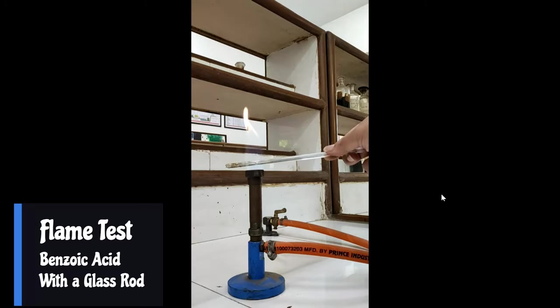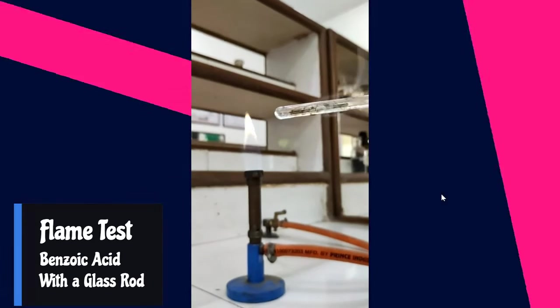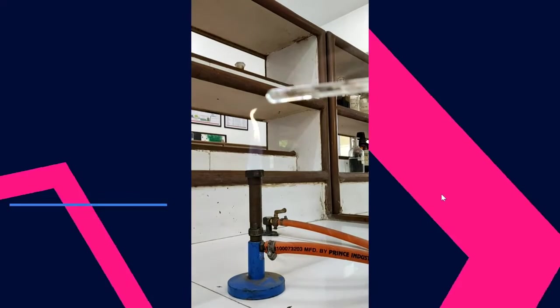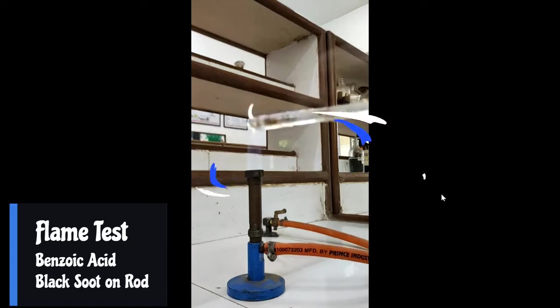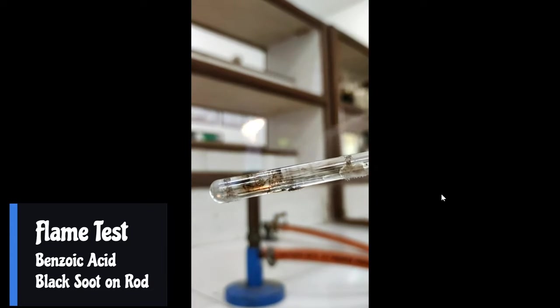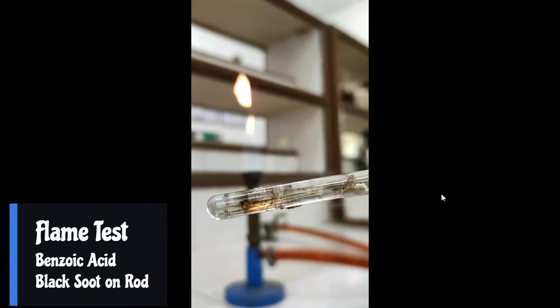Once you heat this, you will be able to observe a black color sooty flame, or the compound itself becomes black. So here you can see black soot particles, carbon particles deposited on the rod. Now, even if you have a doubt that whether the compound is aromatic or not, you can perform the same test using a porcelain piece.